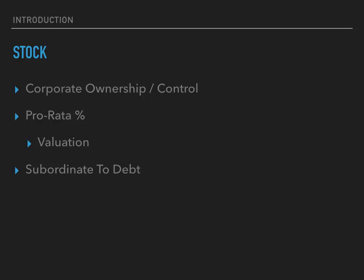Stock is subordinate to debt. This means that in a merger or acquisition, or a bankruptcy, or any other time the company is liquidated, the debt holders are paid first. This is important to note because stockholders have what's called a residual claim, but they do not get first rights to the company's money, or the value of the company, if there are debtors who are superior to them.